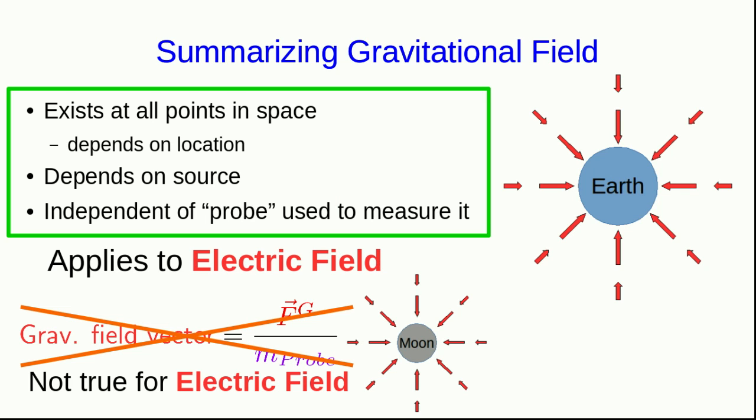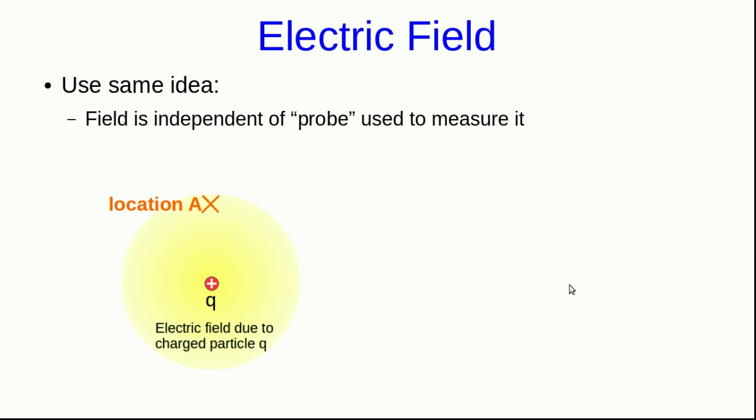All of this will apply to the electrical field as well. The specific expression for how you determine it won't. But the idea that we used to get that expression, which is that the field has to be independent of the probe used to measure it, does apply to electric fields. So now let's shift from gravitational fields to what we're actually interested in, which is electric fields. And we'll use the same idea.